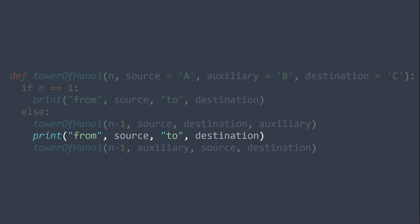Last step, we want to move those N-1 disks from auxiliary to destination, so we call the same function with N-1, and the destination remains the destination, but we switch between the source and the auxiliary, because we were taking those disks from B to C and not from A to C. That's it, we finished our task, and this function will do all the work and will print all the moves we need to perform in order to solve a Tower of Hanoi puzzle of N disks.